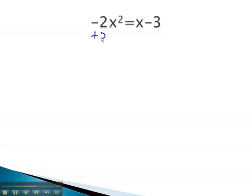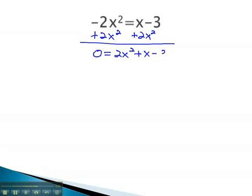We do this by adding the 2x squared to both sides. We now have 0 equals 2x squared plus x minus 3.